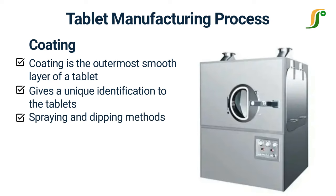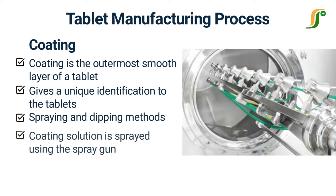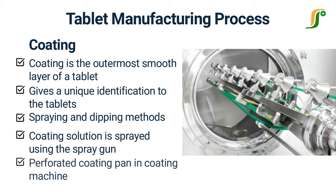In the dipping method, the tablets are dipped in a coating solution and removed to dry. It requires a coating pan to dip in and an oven to dry the tablets. In the spray method of coating, the coating solution is sprayed using a spray gun. Tablets are placed in a perforated coating pan and the coating solution is sprayed slowly. Air passes through the holes of the perforated pan to dry the tablets during the coating process.